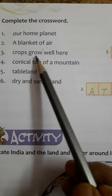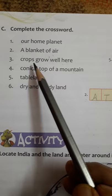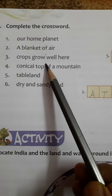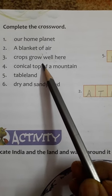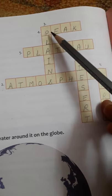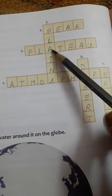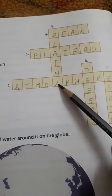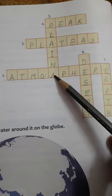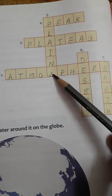Number 3, crops grow well here. In which area do crops grow well? Third is here, so you will write the answer downwards. Answer is Plains: P-L-A-I-N-S. In plain areas crops grow well.